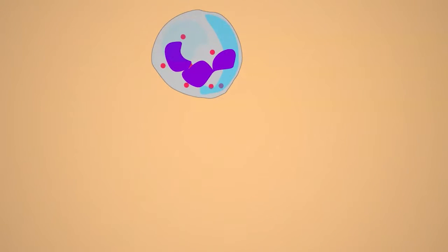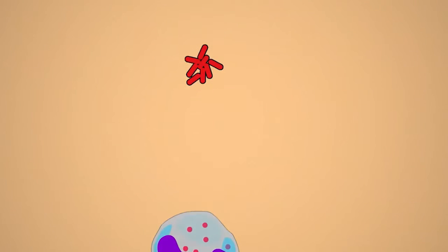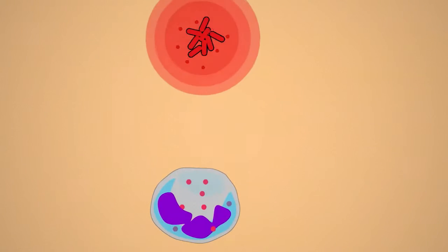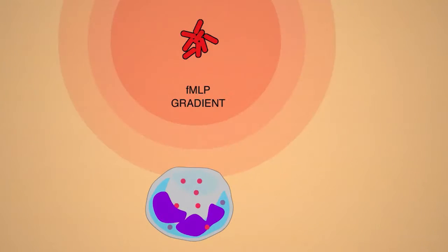But how do neutrophils find the bacteria? Neutrophils express receptors for formulated peptides that are chemoattractants released from bacteria. Neutrophils use these formulated peptide receptors to detect and pursue bacteria by following chemoattractant gradients emanating from sources of infection.